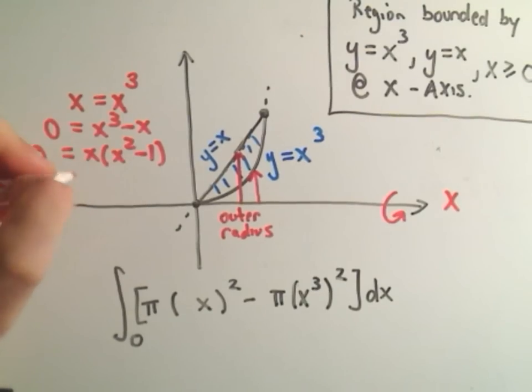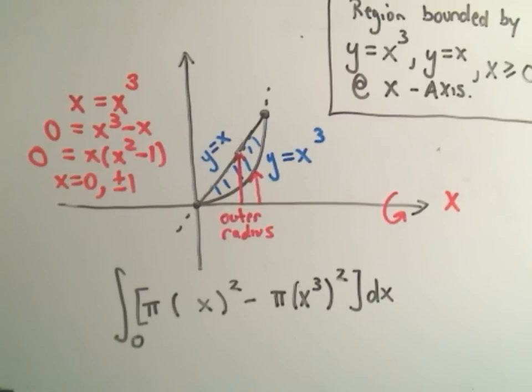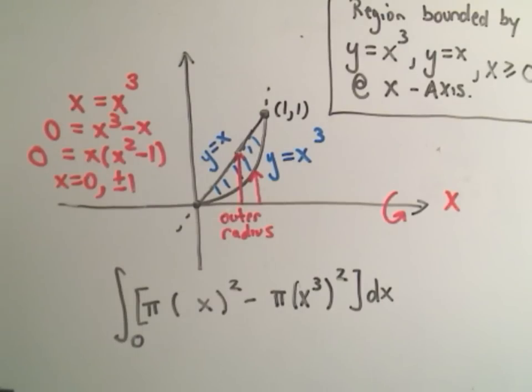If you factor x squared minus one, we would get the solutions x equals zero from the first part, and then positive and negative one. And again if you kept graphing, these things would cross over here at negative one. So that's why we're getting all three solutions. But clearly in the first quadrant this will be the x coordinate of positive one where they're hitting.